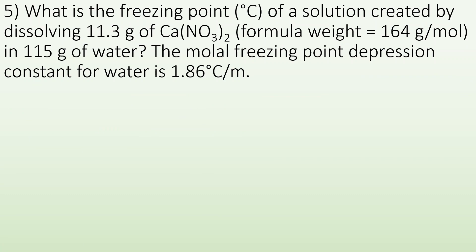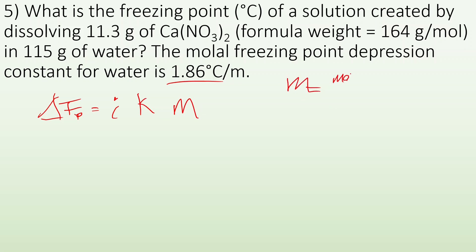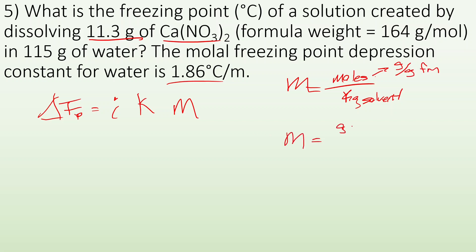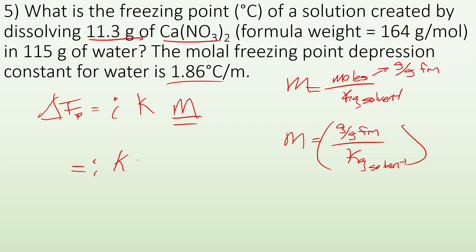Number five — what is the freezing point of a solution created by dissolving 11.3 grams of calcium nitrate, given the formula weight, in 115 grams of water? The molal freezing point depression constant is given. We know the change in freezing point equals i × Kf × m. Molality is moles of solute over kilograms of solvent, and moles equals grams divided by GFM. Combining these, molality equals grams over GFM divided by kilograms of solvent. Substituting in, we get: ΔTf = i × Kf × (grams / GFM) / kilograms of solvent.